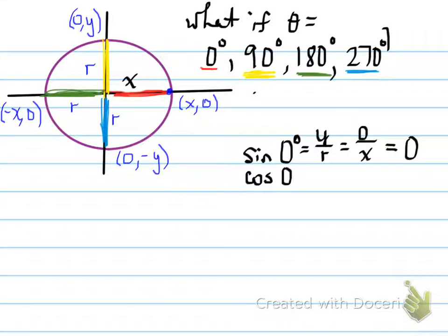So, when we represent the y over r, y in this coordinate that we're looking at is 0. Notice the coordinate for the red, the y is 0, and the r is x. What is 0 over x? Well, the answer to that is 0. So, sine of 0 is 0.